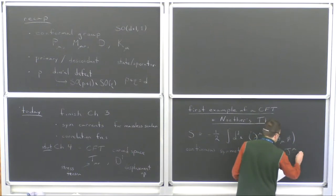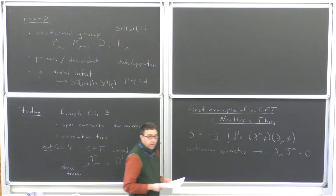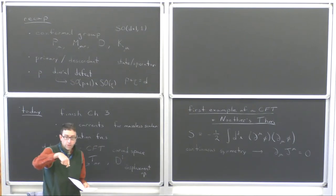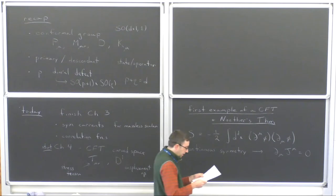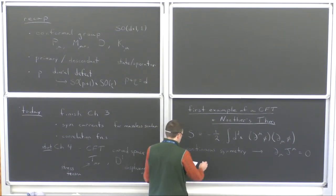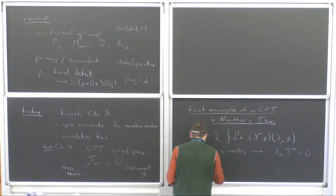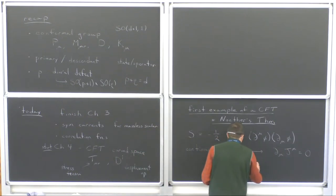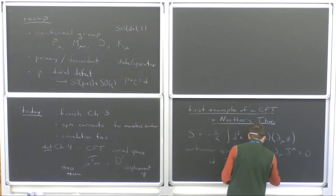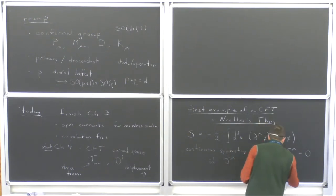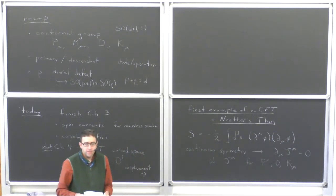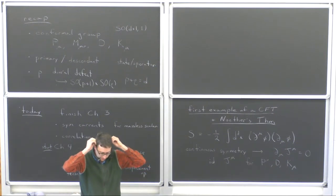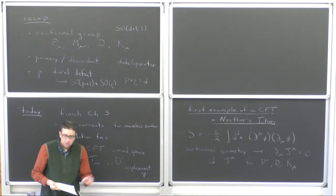What I'd like to do now is identify what the symmetry current is for our charges P_mu, D, and K_mu. P_mu you've probably seen before; D and K are hopefully new. We're going to skip rotations, but you could do those too if you want.